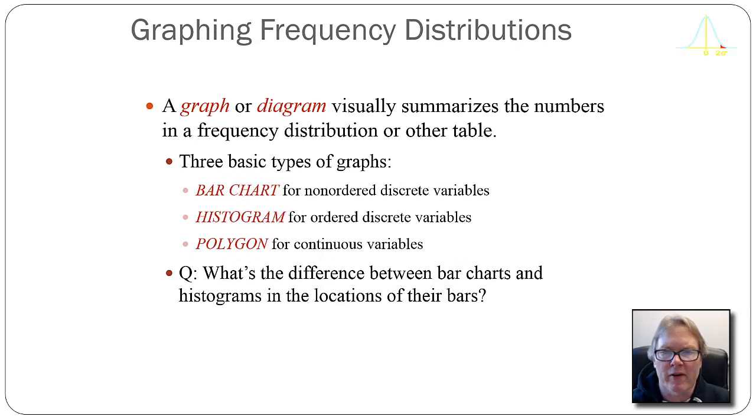There's a couple of different graphs that are very typically used in the social sciences. We can use a bar chart, a histogram, or a polygon. I would say the bar graph or bar chart and histogram are most widely used for a single variable for a univariate frequency distribution.